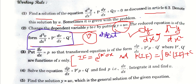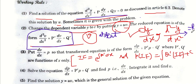V वाली term यहाँ absent होनी चाहिए। अगर solution करने के बाद जो नई differential equation है उसमें V present है, तो आपके solution में कोई mistake हुई है। ध्यान रखें कि यह equation जिसमें equal to R given है, उसमें equal to 0 वाला part use करेंगे। जब V absent हो जाए, तो DV/DX को नया variable P put करेंगे, तो आपकी equation transform हो जाएगी।